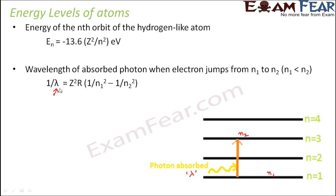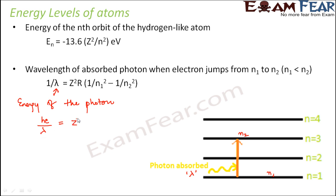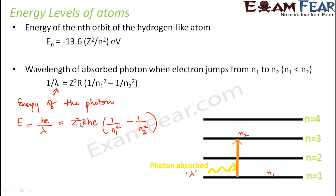To find the energy of the photon rather than the wavelength, we know that energy equals hν or hc/λ. If we multiply both sides of the wavelength expression by hc, we get the energy of the photon: E equals Z²Rhc times (1/n1² minus 1/n2²).